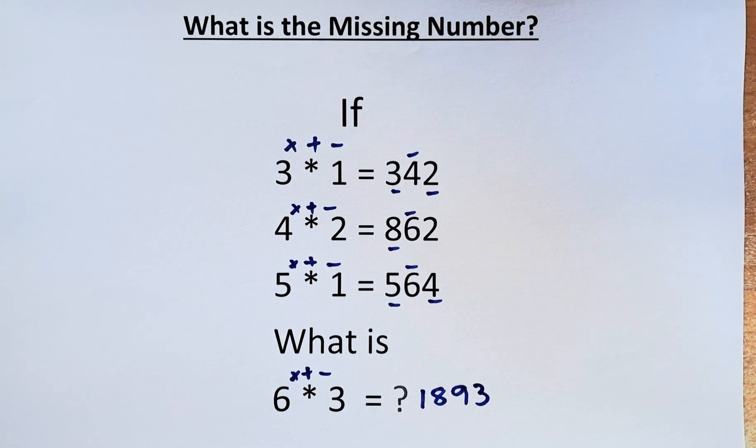So 6 star 3 is equal to 1893. I believe most of you got it right because you guys are geniuses. Have a good weekend, everyone. See you soon.